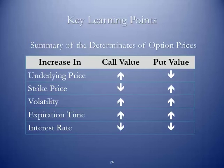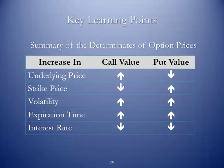Here are the determinants of options prices. If there's an increase in the underlying price, that's going to increase the value of the call and decrease the value of the put. If there's an increase in the strike price, that's going to lower the call value and increase the put value. If volatility increases, both the value of the call and the put are going to increase. As you can imagine, if there's volatility in the marketplace, models like Black-Scholes and others are going to reflect that added volatility.